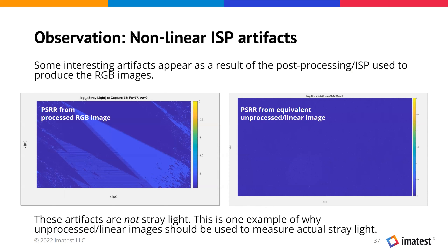Another important observation: you should use linear image data to analyze stray light. Here we have a processed RGB image that went through the camera's ISP on the left, and an equivalent unprocessed or linear image on the right. If you use non-linear image data, you'll end up with artifacts such as banding — triangular artifacts in the image that are being quantified as stray light but aren't actually stray light. That's why you should use linear image data for stray light testing.